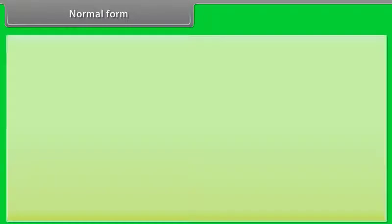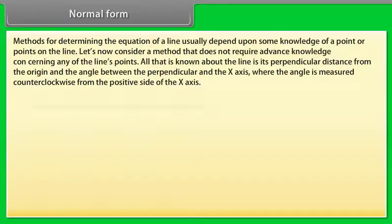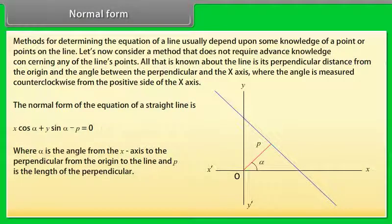Normal form is a method that does not require advanced knowledge of any of the line's points. All that is known about the line is its perpendicular distance from the origin and the angle between the perpendicular and the x-axis, measured counterclockwise from the positive x-axis. The normal form of a straight line is x·cos α + y·sin α − p = 0, where α is the angle from the x-axis to the perpendicular from the origin to the line, and p is the length of the perpendicular.